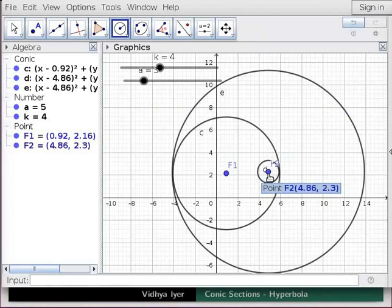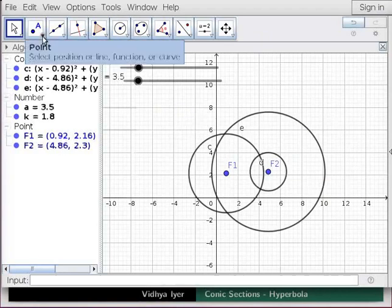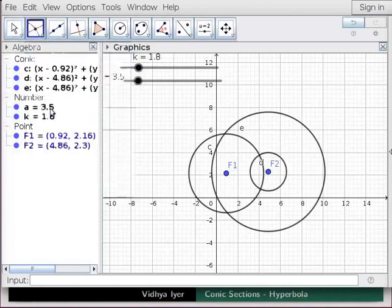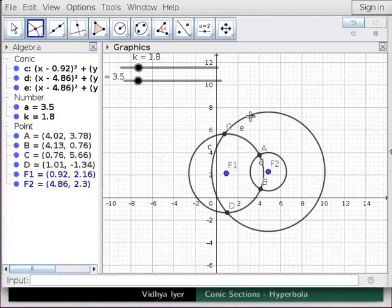Set slider K between 1 and 2, slider A between 3 and 4. Under Point, click on Intersect. Then click on Circles C and D and Circles C and E. This creates points A, B, C and D.